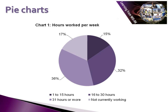We also have a legend at the bottom of the pie chart, which tells us what each of the slices represents. So the darkest of the purple slices is 1 to 15 hours and is associated with 15% of the people who answered the question, and so on and so forth. So that shows a good example of what a pie chart can do and what a pie chart looks like.